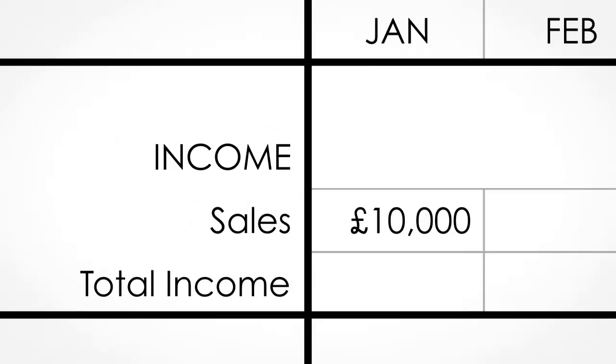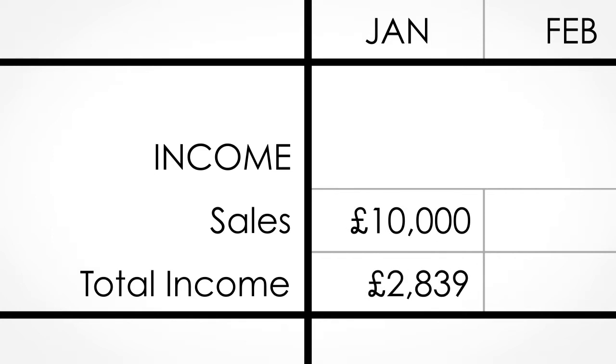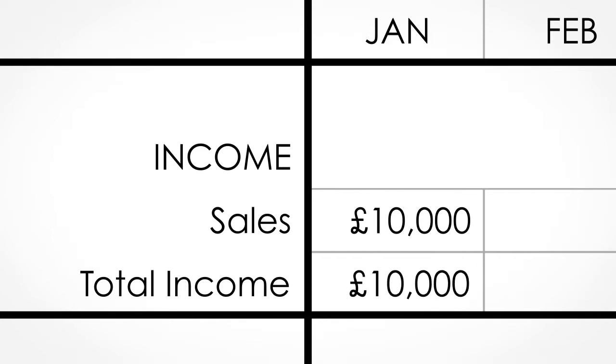For instance, say you predict to pay ten thousand pounds into your bank in January — you would record that in the income section.